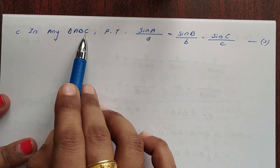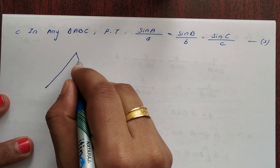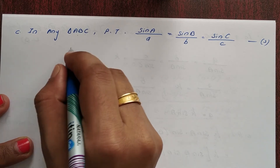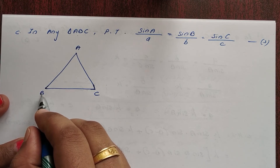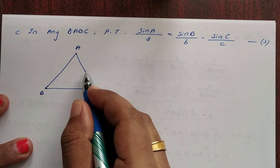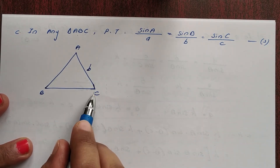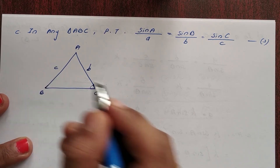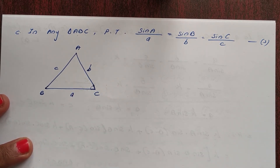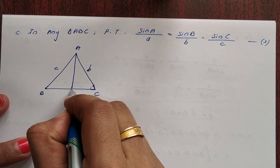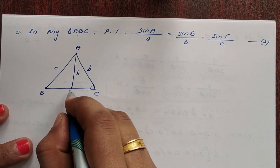In triangle ABC: angle B is opposite side small b, angle C is opposite side small c, angle A is opposite side small a. We draw a perpendicular from A to side BC, with height h and foot at point O.